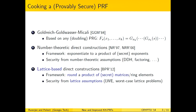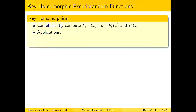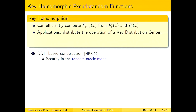Now let's talk about key homomorphic pseudorandom functions. Key homomorphism is in the sense of additive homomorphism: given the output of the function on input x with seeds s and t respectively, we can efficiently compute the output of the function on the same input x but on the seed s plus t. This has many applications. The first such construction was proposed by Naor, Pinkas, Reingold, and Kindness, a Decision Diffie-Hellman based construction with security in the random oracle model.